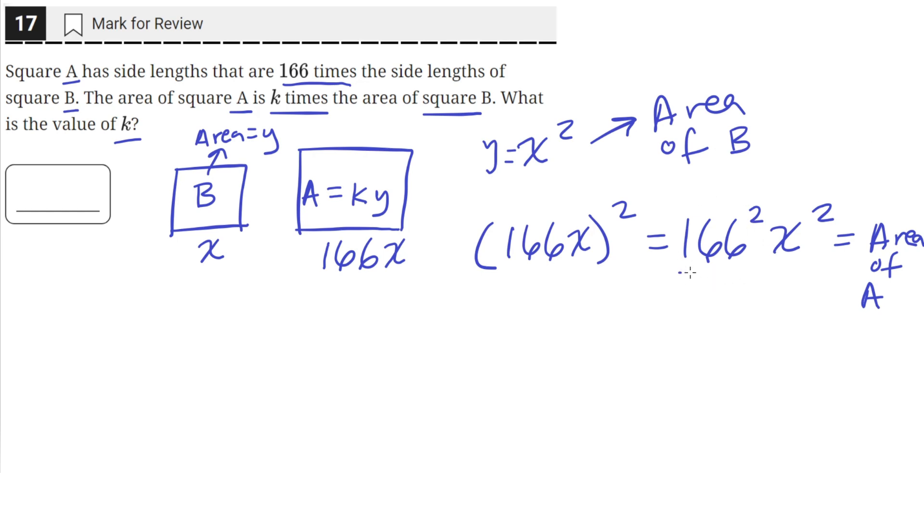So if we find the value of this constant, 166 squared, this x squared is in both. And so this is just the value of k. This will be the coefficient of x squared, which is the area of B. So k will just be this coefficient.